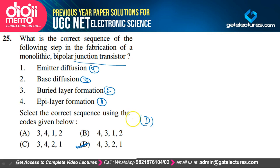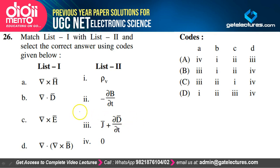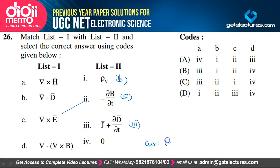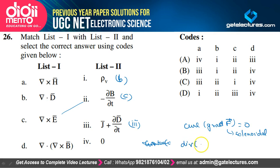Match the Maxwell's equations: ∇×H is matched to option 3 (A→3); ∇·D = ρv (Gauss's law) is matched to 1 (B→1); ∇×E is matched to 2 (C→2); and divergence of curl of any vector F = 0 (solenoidal/irrotational identity) is matched to 4 (D→4). Option B satisfies the explanation and is the correct option.